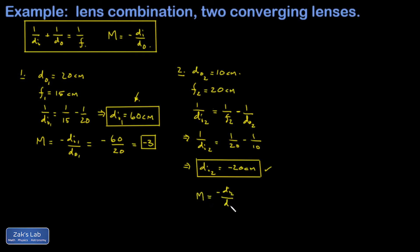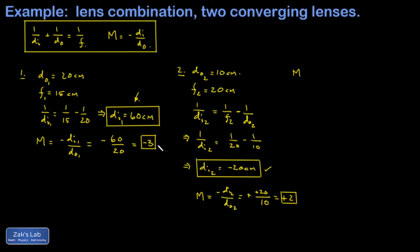The magnification at the second stage is m2 = −di2/do2 = −(−20)/10 = +2. A positive magnification means the orientation doesn't flip at this stage — the image stays inverted, and the size is blown up by a factor of 2. To get the total magnification, multiply the magnification factors at each stage: m_total = (−3) × (+2) = −6. The minus sign confirms the final image is inverted compared to the original object.